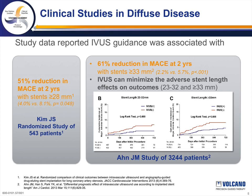I'd like to touch on two clinical studies on the use of IVUS in diffuse disease. The first study, published in JACC Interventions in 2013, was a study of 543 patients randomized to angiographic or IVUS-guided intervention. The results showed a 51% reduction in MACE rate at two years in patients with stents greater than 28 millimeters when IVUS was used, with a reduction from 8.1% to 4.0%.